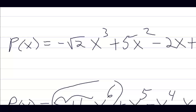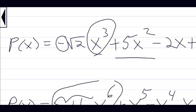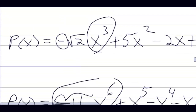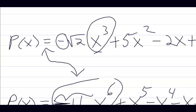Here we have p(x) = -√2·x³ + 5x² - 2x + 5. All we're being asked is to find the end behavior. The end behavior of this will be exactly the same as y = -x³. Take your eraser and erase the middle — now you have a graph of the end behavior of this function.